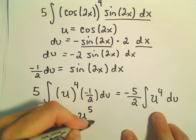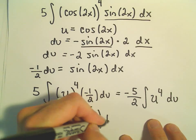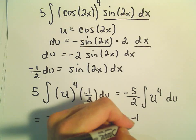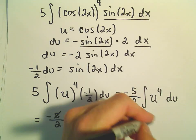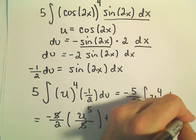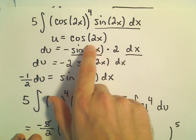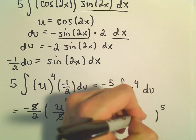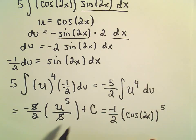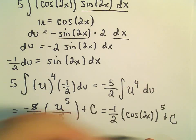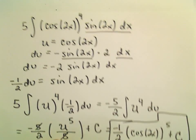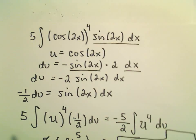We'll get u to the fifth power over 5 plus c. Well, we could just cancel out our 5s, so that would leave us with negative 1 half. And then we would have u to the fifth. But again, u is cosine of 2x. So I'm just going to put our cosine of 2x inside of there. And then we have our plus c left over. And again, that would be our antiderivative for our original problem here.